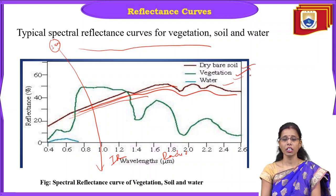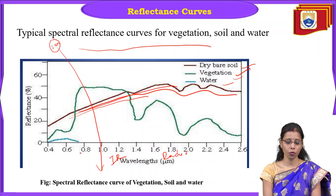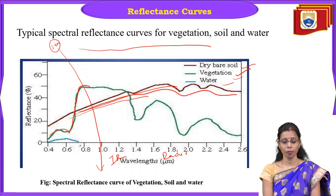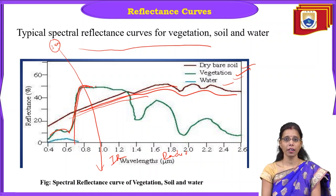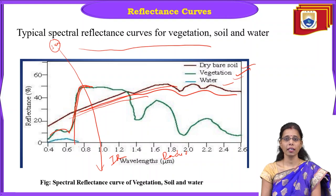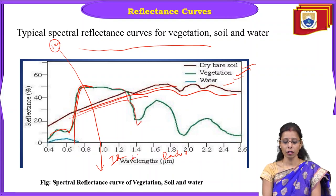Vegetation shows more peak and valley configuration. In the visible region from 0.4 to 0.7, it is absorbing, so the valley is totally down. Then suddenly it goes up as a peak in the infrared region because of the presence of chlorophyll and water content in the leaves — resulting in high reflectance in the infrared region of the green band. In the microwave region there is again a peak and valley, slowly falling down in the radio region.